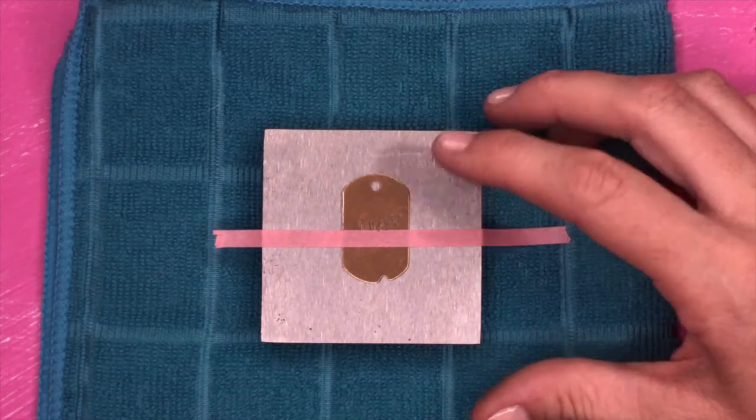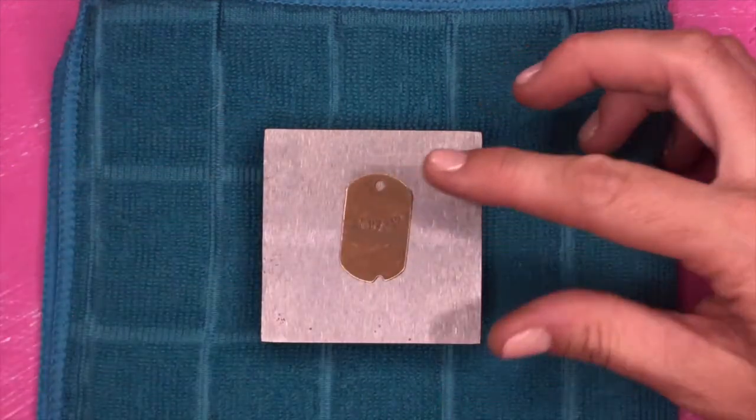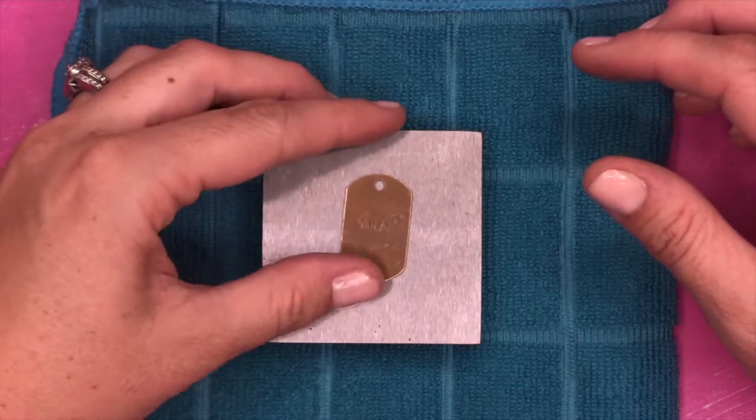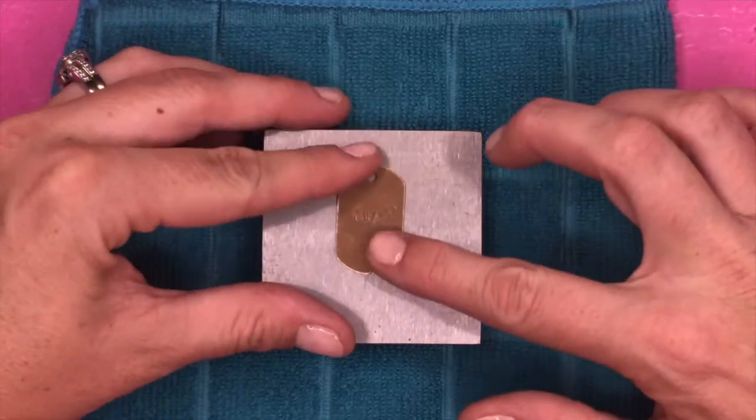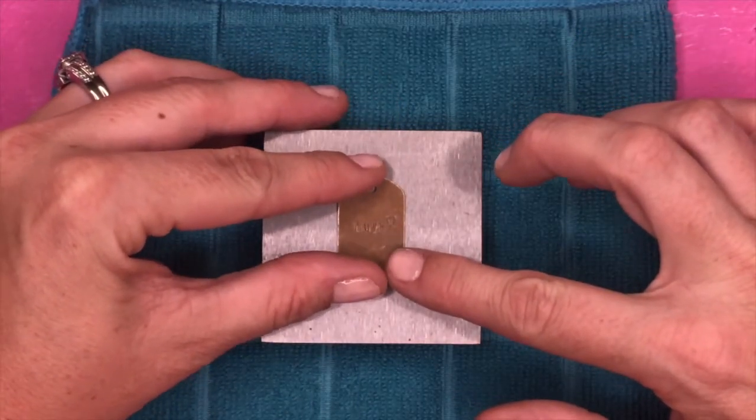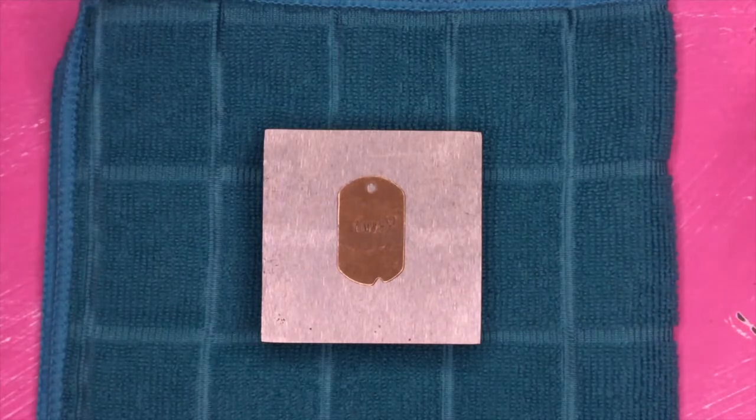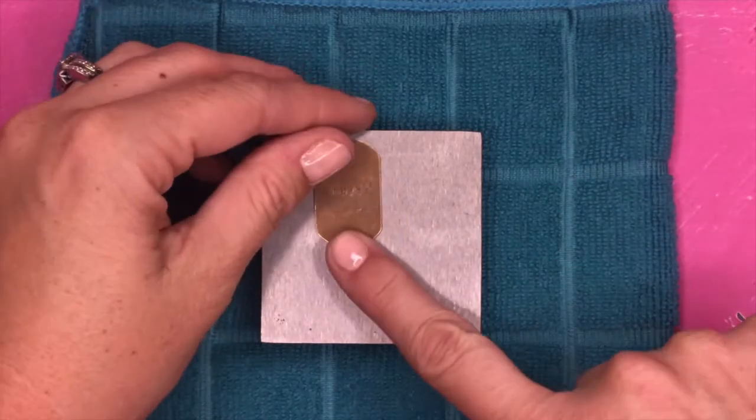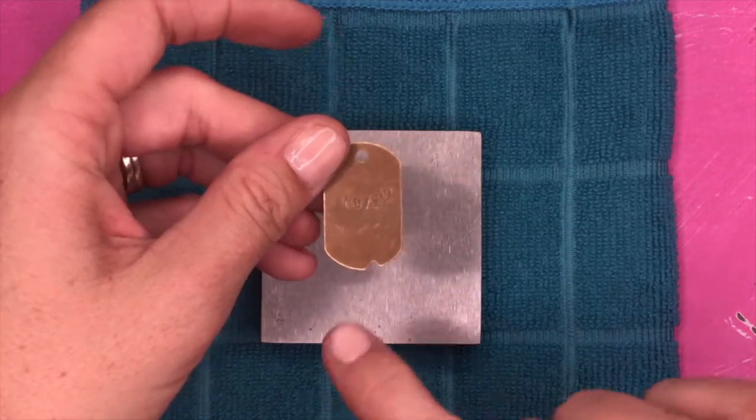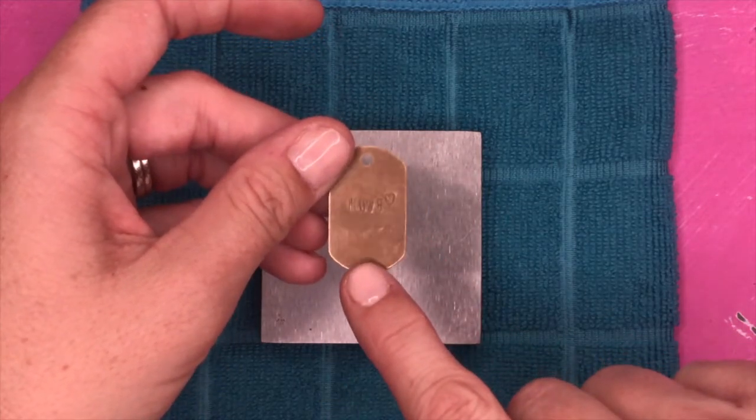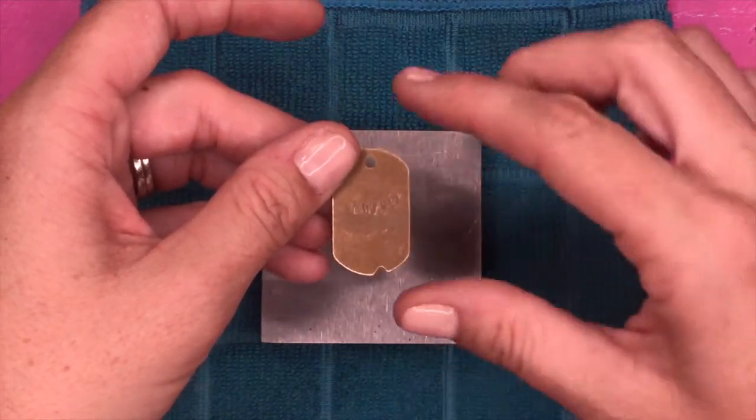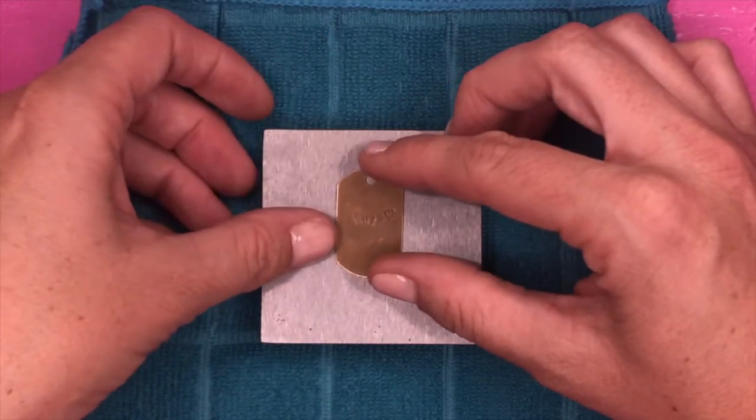Okay. Now keep in mind when you stamp, it's not going to be perfect. I think that is the beauty of creating handmade jewelry. So you can see here my V is just a little bit off, but it's still so sweet. So I want you to keep in mind that it doesn't have to be perfect.